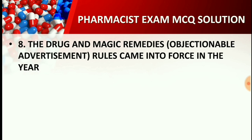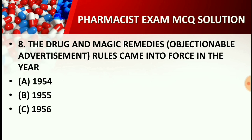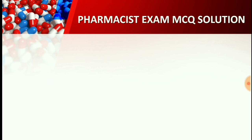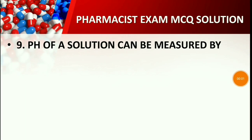Question number eight: The Drug and Magic Remedy Act objectionable advertisement rules came into force in the year — Option A: 1954, Option B: 1955, Option C: 1956, Option D: 1957. The right answer is Option A: 1954. The Drug and Magic Remedy Act was passed and came into force in the year 1954.